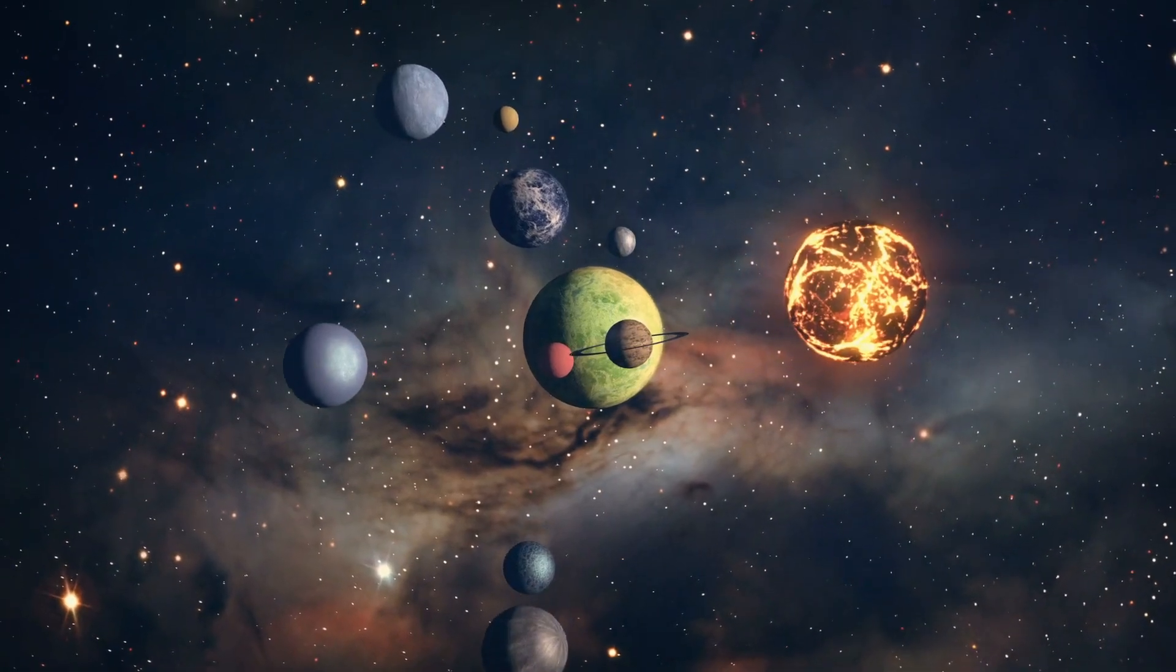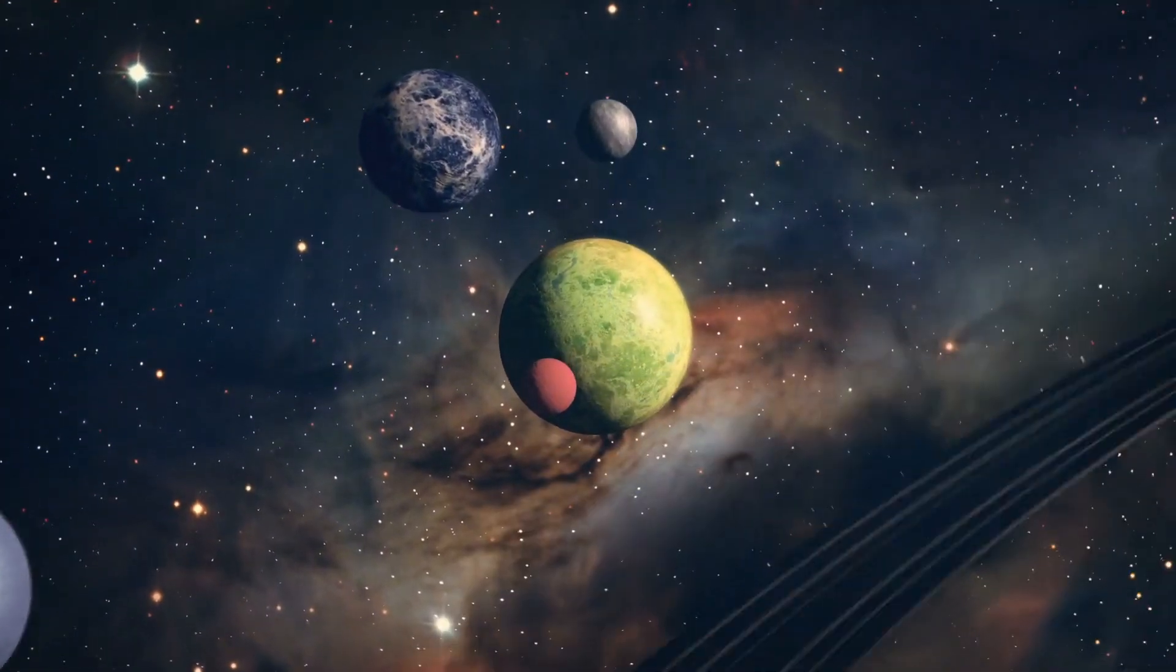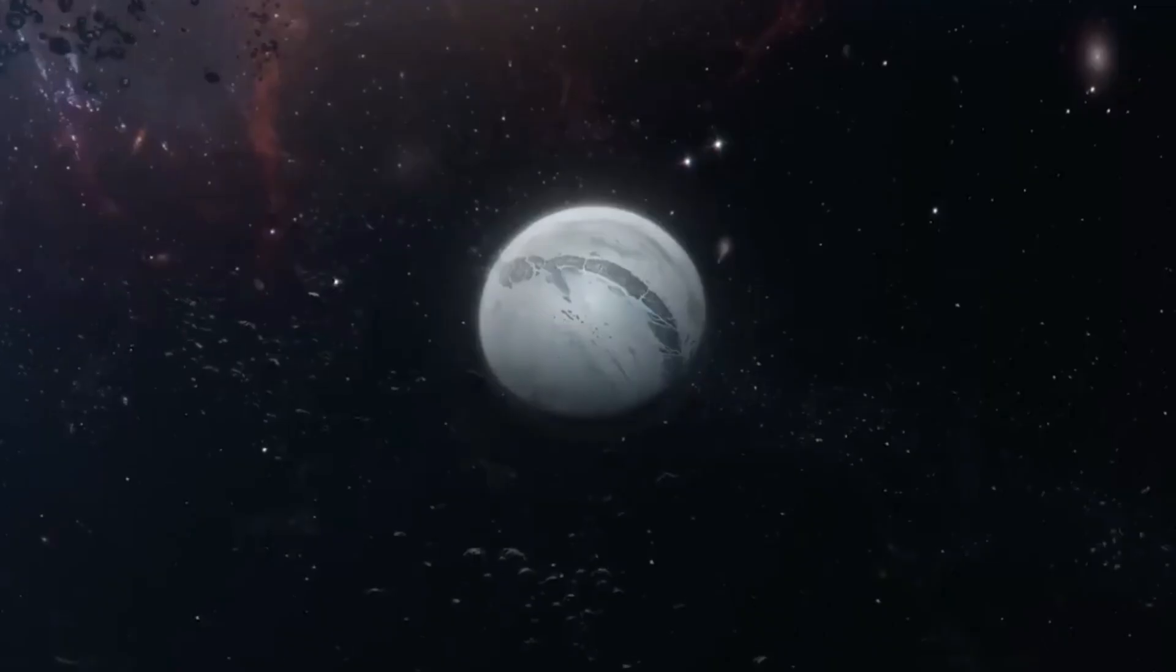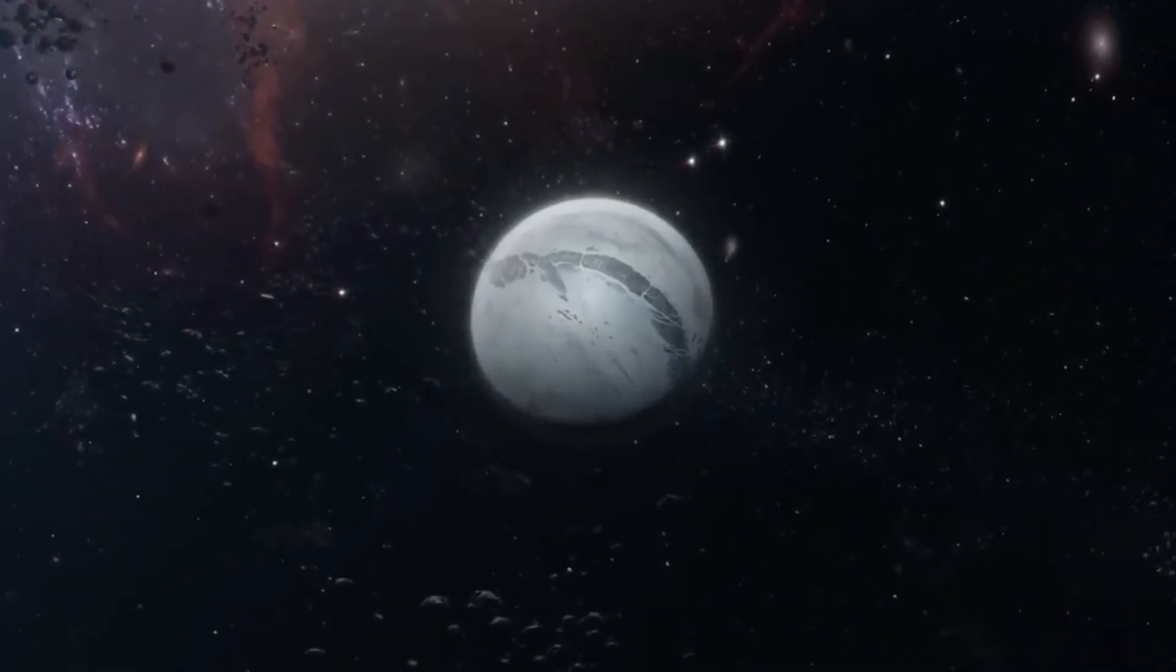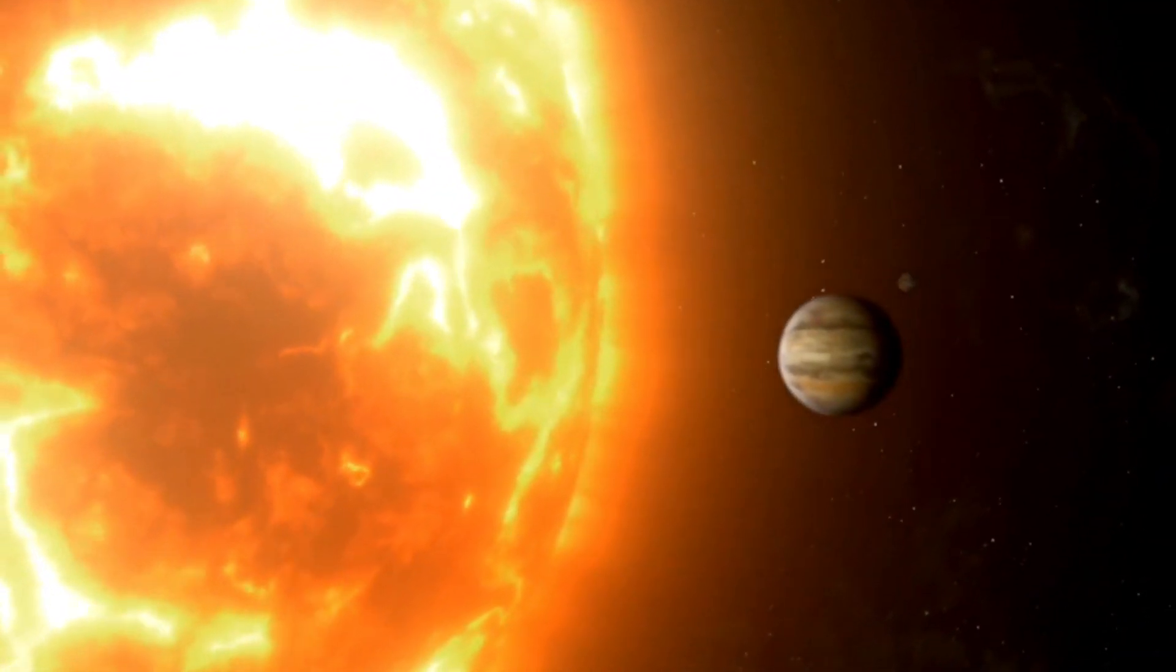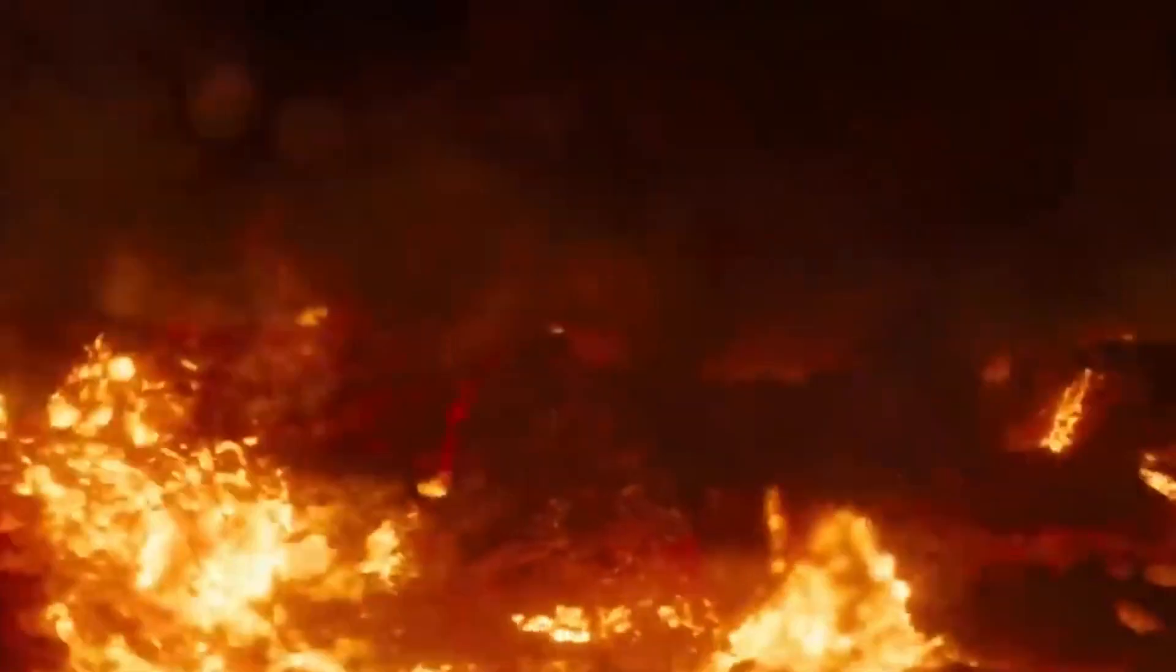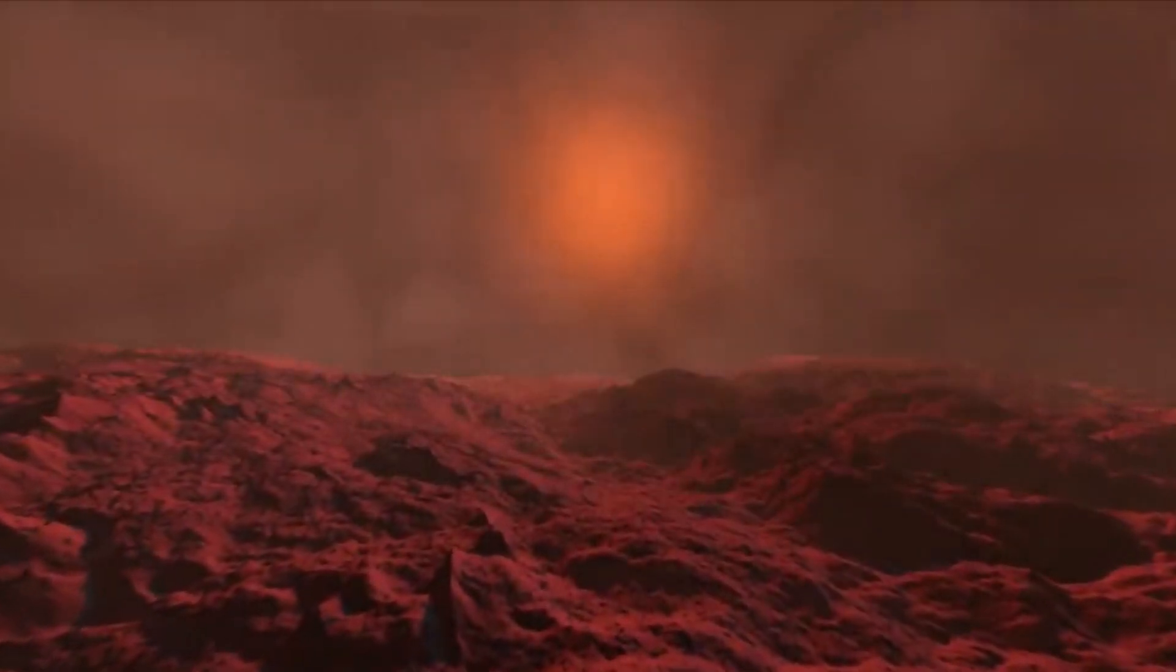NASA has found 3,730 confirmed exoplanets, 2,724 candidates that might also be exoplanets, and 2,783 planetary systems—groups of stars that have confirmed planets. Let's look at some of the most extreme, dangerous, and horrible planets to visit in this universe.